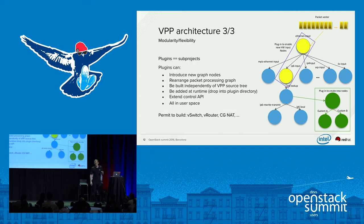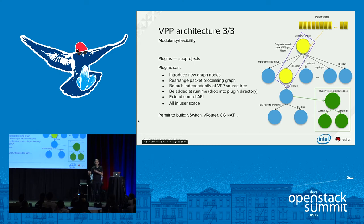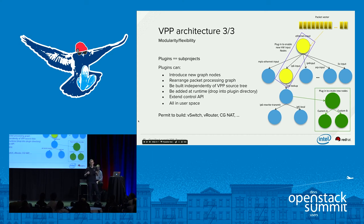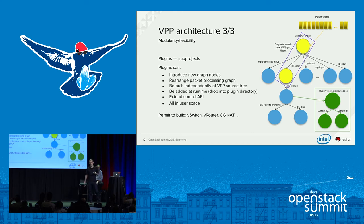In terms of modularity and flexibility: it's easy to build graph nodes for your use case — you create your stack for your need. You can add plugins, and a plugin is often a sub-project in VPP. A plugin is a bunch of nodes that can rearrange the original graph, built independently of VPP source, added at runtime, and can extend the configuration API. For instance, NSH SFC is one of these plugins. All in user space — it permits building vSwitches, vRouters, anything processing packets.